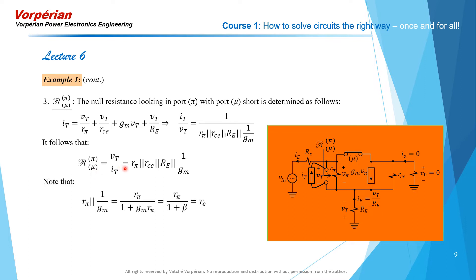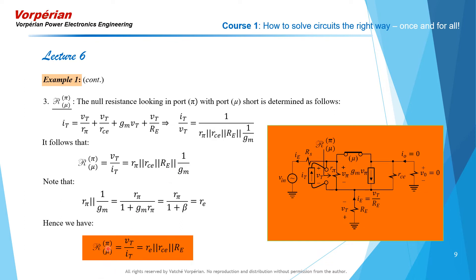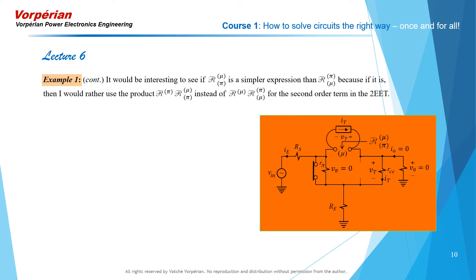We recognize that R_pi in parallel with 1/g_m equals R_pi / (1 + beta), which equals the intrinsic emitter resistance r_e. So the expression simplifies to R_E in parallel with R_CE in parallel with the emitter resistor r_e. Before moving on, I want to check whether R_mu_pi is a simpler expression than R_pi_mu, since using a simpler product for the second-order term in the 2EET is preferable.